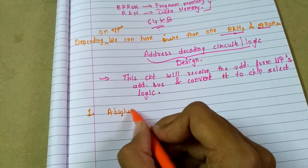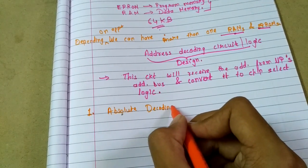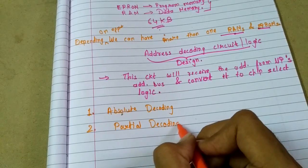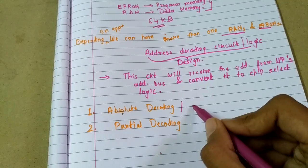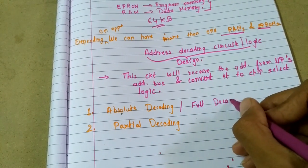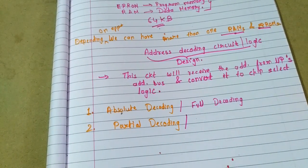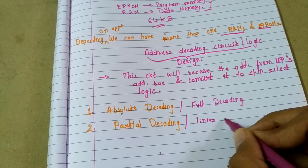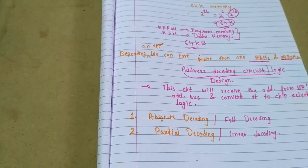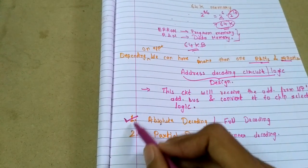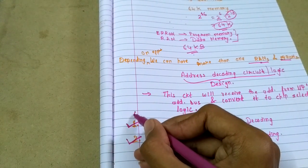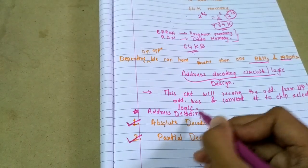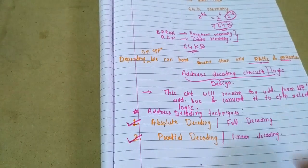The first method is absolute decoding, and the second one is partial decoding. Sometimes absolute decoding is also called full decoding, and partial decoding is sometimes also known as linear decoding. We will discuss both these decoding techniques, which are also called address decoding techniques.